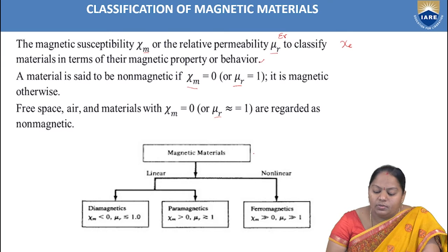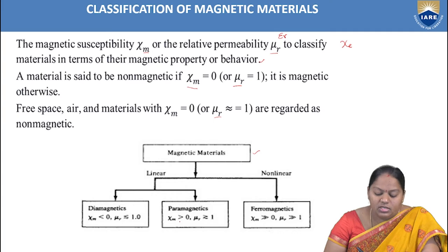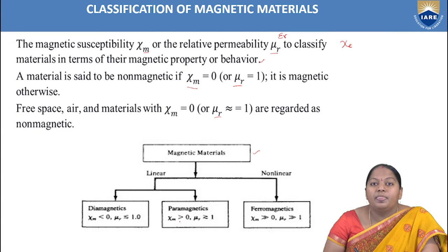Generally, magnetic materials are of two types: linear and non-linear magnetic materials. Under linear, we have two classifications — diamagnetic materials and paramagnetic materials — and under non-linear we have ferromagnetic materials.